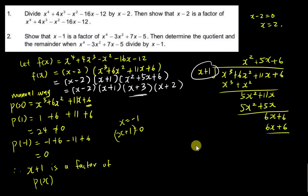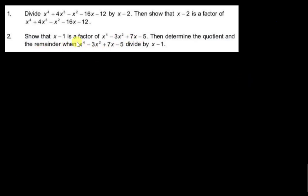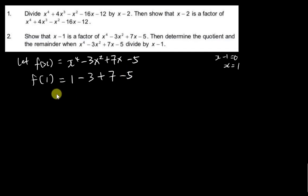Now for question 2. The question asks me to show that (x minus 1) is a factor of x to the power of 4 minus 3x squared plus 7x minus 5. I let f(x) equal that polynomial. I try f(1): since x minus 1 equals 0 gives x equals 1, I substitute 1 in. That gives 1 minus 3 plus 7 minus 5. Negative 8 plus 8 equals 0, so I write 'shown.'